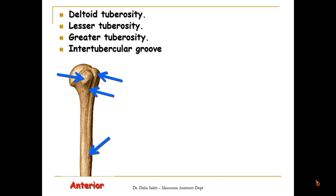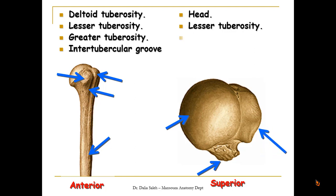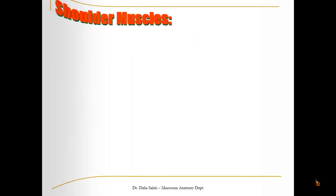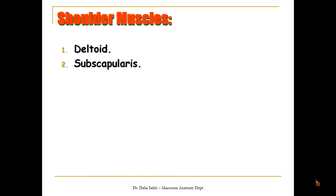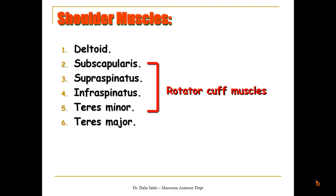This is the anterior surface of the left humerus. The projection on the lateral surface is the deltoid tuberosity. We can also see the lesser tuberosity and the greater tuberosity, and between them lies the intertubercular groove. Looking at the humerus from above, you can see the head of the humerus, the lesser tuberosity, and the greater tuberosity with three impressions — the superior, middle, and inferior impressions.